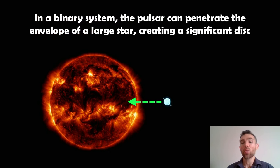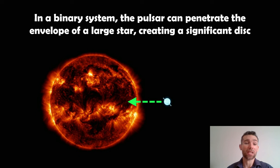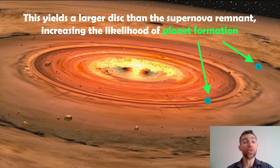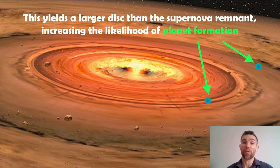A third scenario involves a binary system with a pulsar and a much larger companion star. The pulsar might end up penetrating the outer envelope of that massive star — either because orbits have spiraled inwards over time, or because the larger star has swelled into a red giant phase. Either way, the pulsar penetrates the outer layer of the star, scattering material outwards and producing a disk. This disk is much larger and more massive than the supernova remnant disk, giving a much better chance of forming planets.